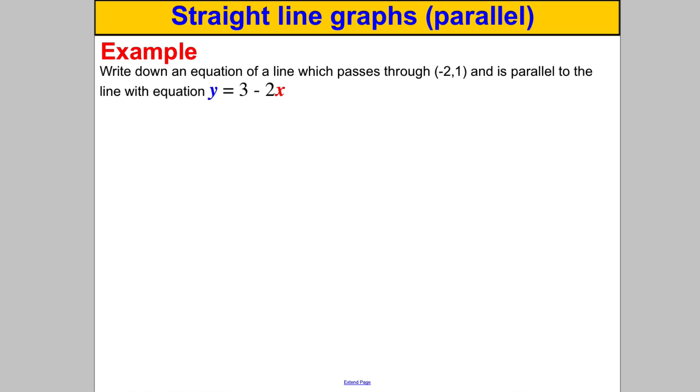So we want to write down the equation of a line which passes through (-2,1) and is parallel to this one here. Now this line I can rewrite it in the form Y equals MX plus C as Y is negative 2x add 3.